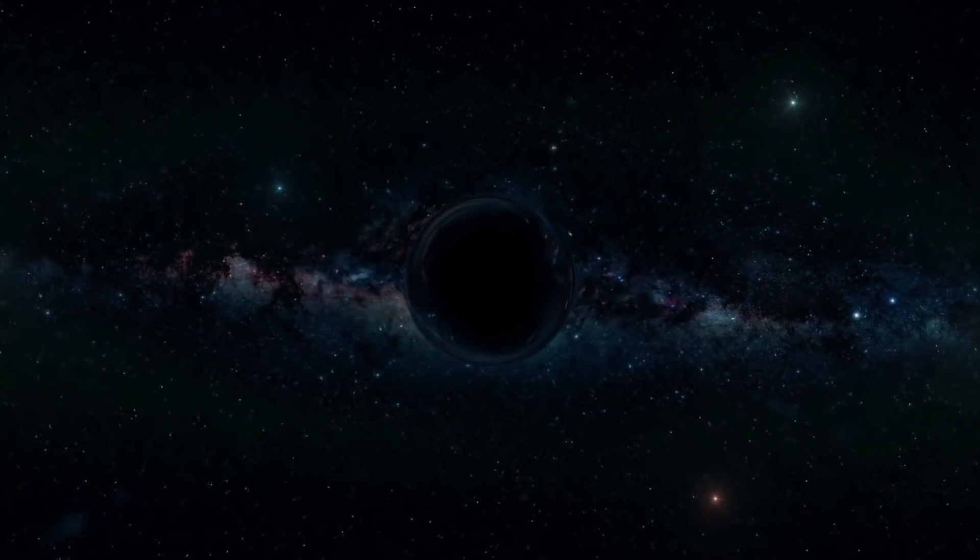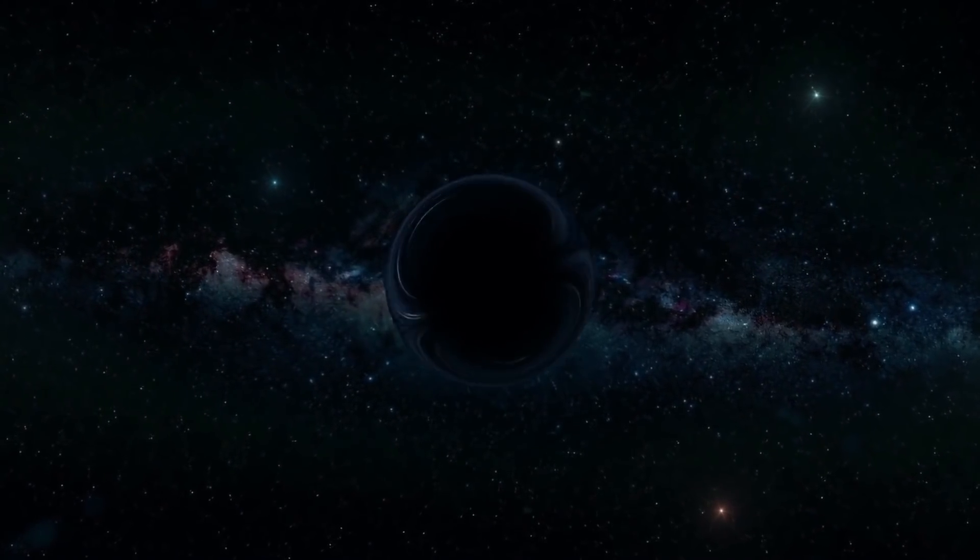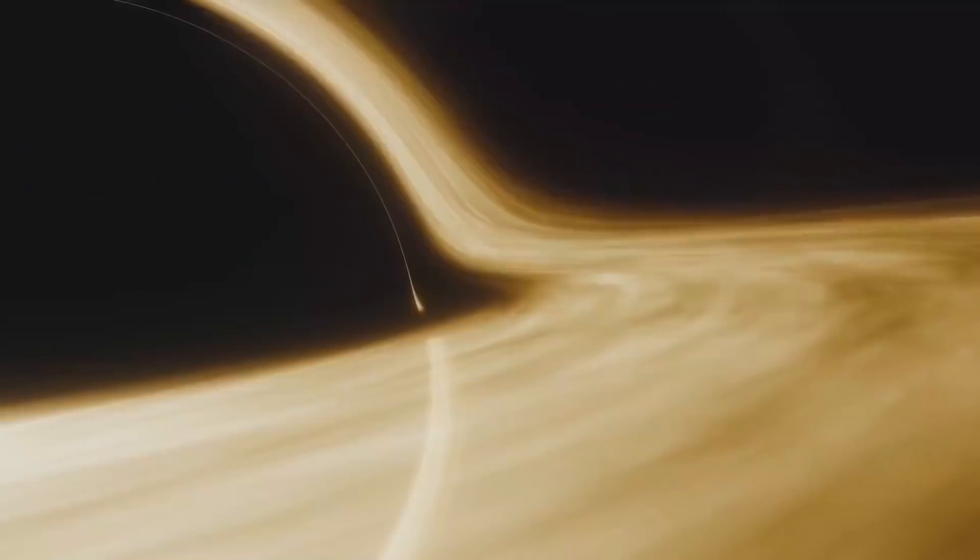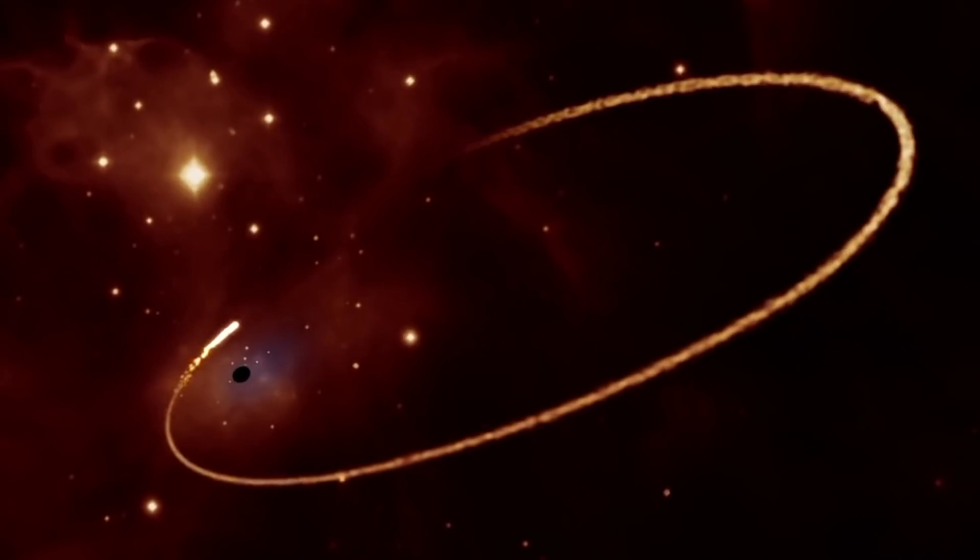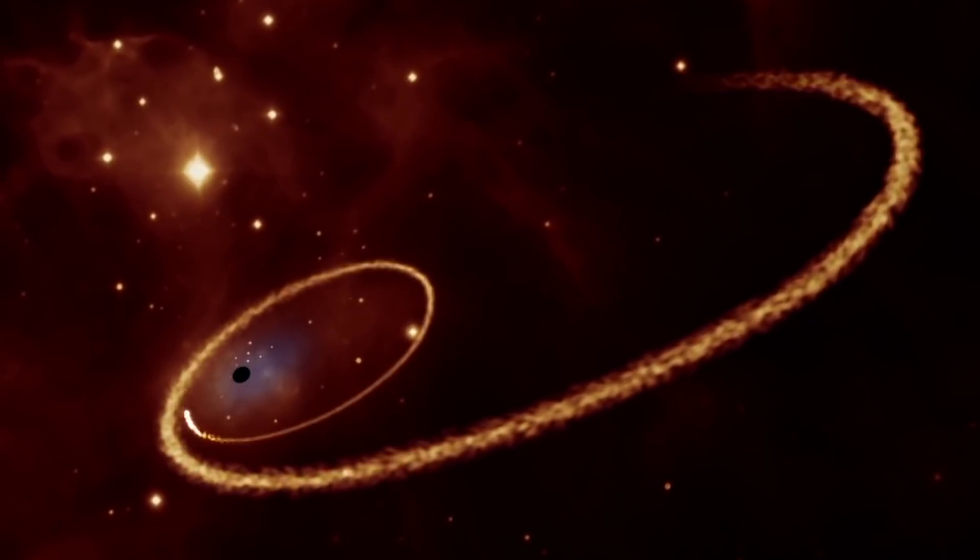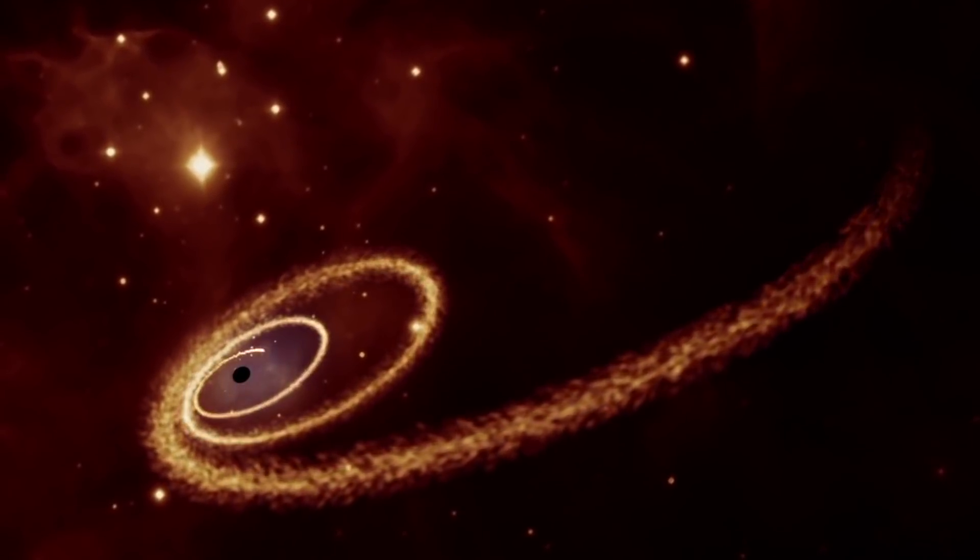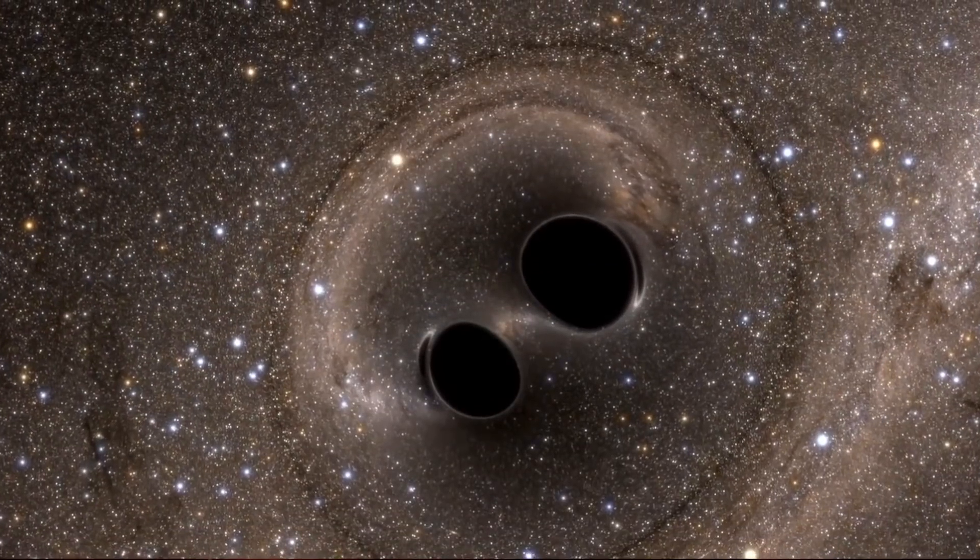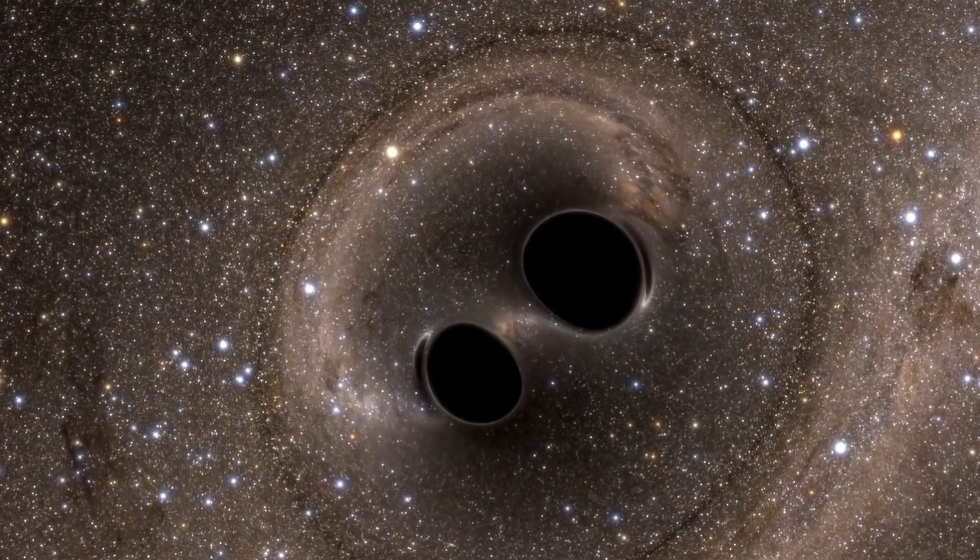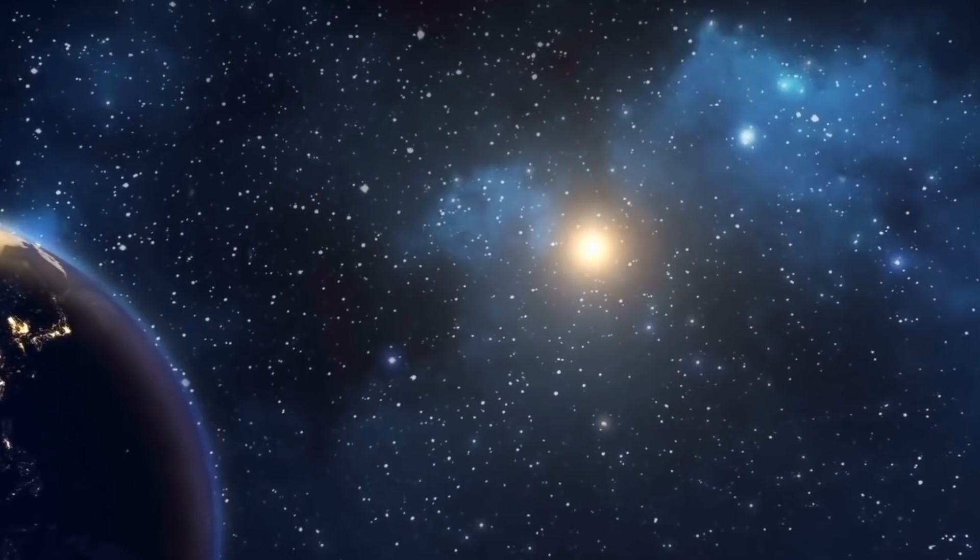According to the study's researchers, this is the first unambiguous finding of an isolated black hole. This black hole is just almost 5,000 light-years away from us. So, is there any possibility that it might enter our solar system at some point and destroy us?